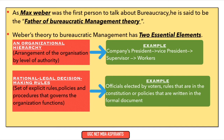Weber's theory of bureaucratic management has two essential elements. The first is organizational hierarchy, which is the arrangement of the organization by means of authority. For example, first comes the company's president, then below the president is a vice president, below the vice president is a supervisor, and after the supervisor come the workers. This hierarchy goes from top level to bottom level.